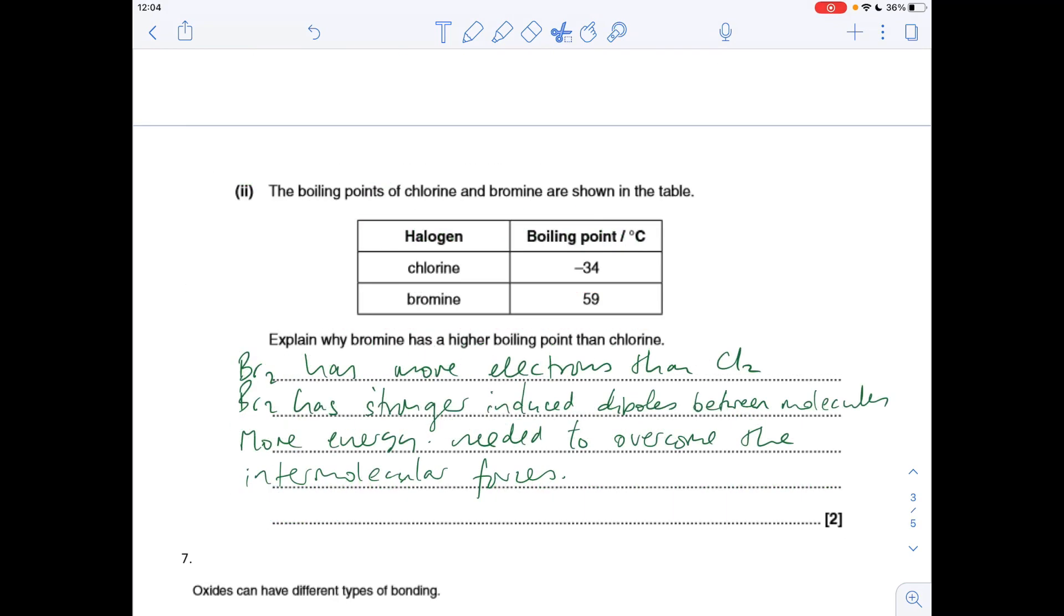The final part of the question is asking us to explain the difference in the boiling points of bromine and chlorine. It's all down to the number of electrons, because the more electrons in a molecule, the stronger your induced dipole-dipole forces. Something like this would do: Bromine's got more electrons than chlorine. It's therefore got stronger induced dipoles between the molecules. So more energy is needed to overcome the intermolecular forces. Whatever you say, do not talk about breaking covalent bonds. That is the most common thing I see.